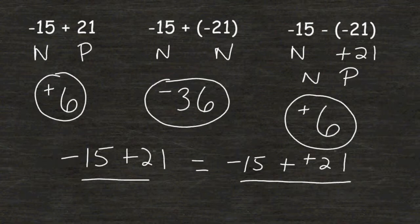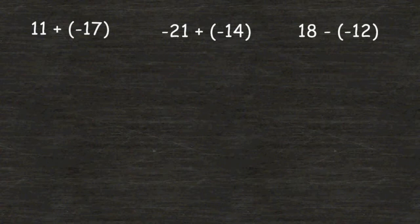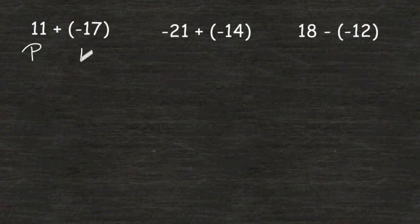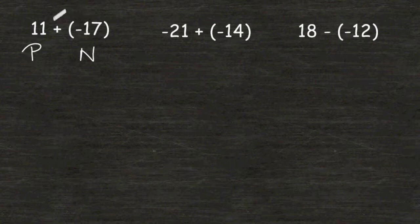Let's try a few more examples. Here we have a positive being added to a negative. We don't have to change any signs here because we do not have a minus immediately followed by a negative like we do in the third example. So we keep this 11 positive and this 17 negative.